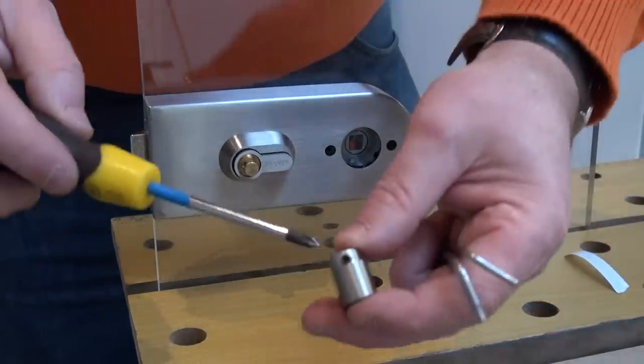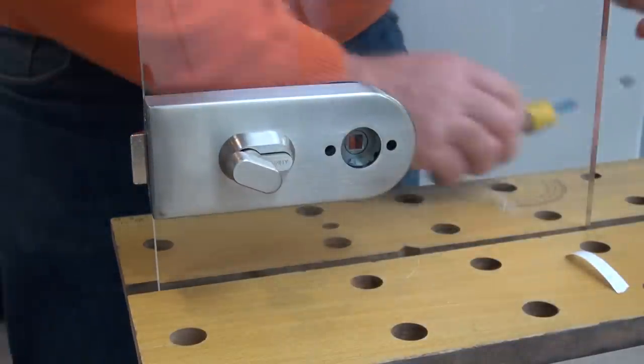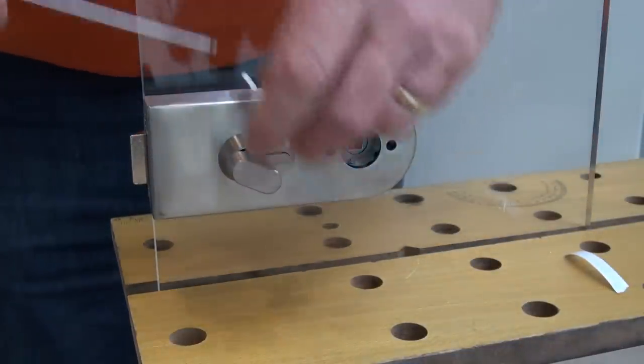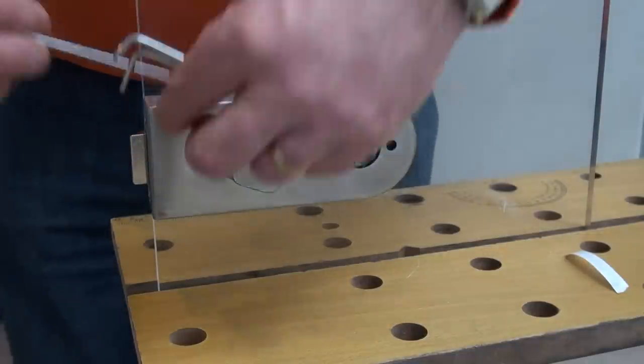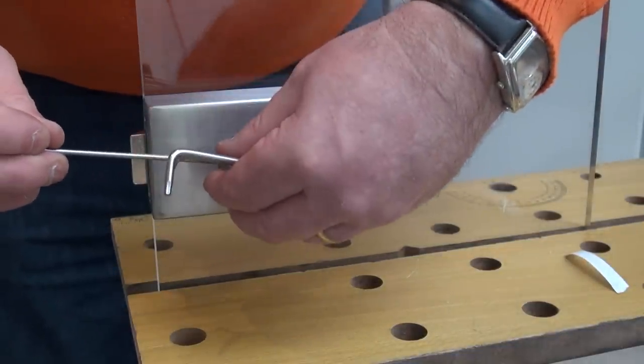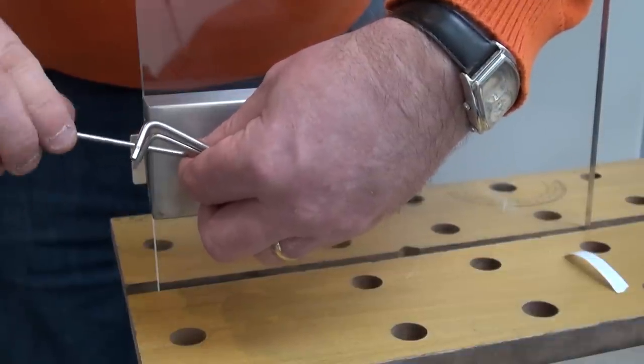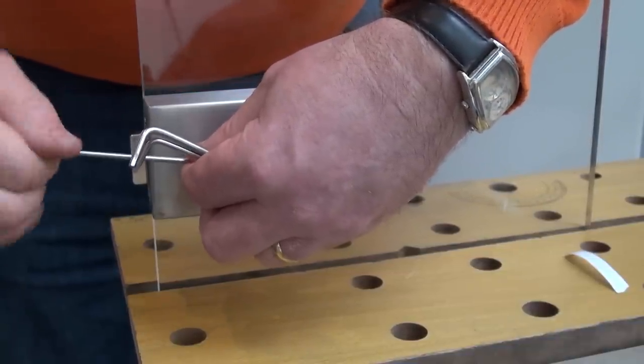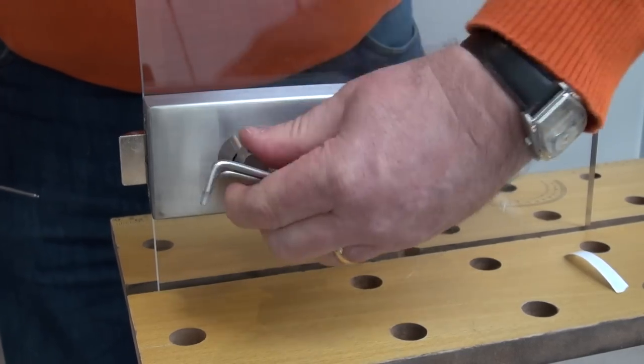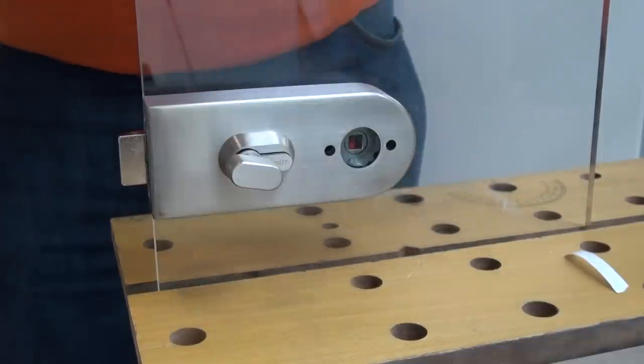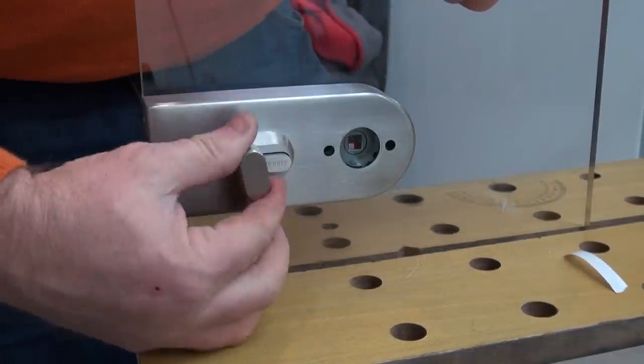If you notice on here, there's a grub screw, there's a hole. They line up with each other. Then take the allen key, take the allen key. Tighten this back on. Lock should throw.